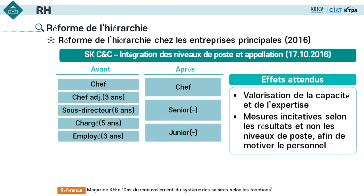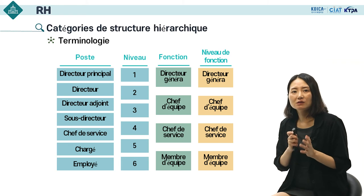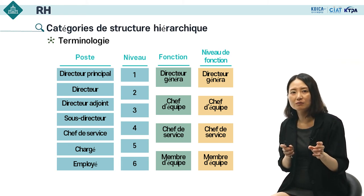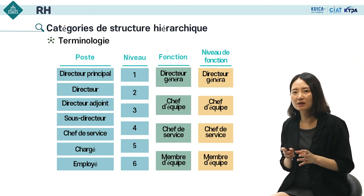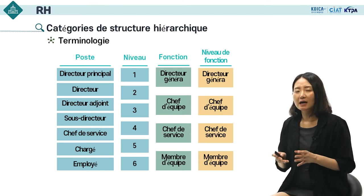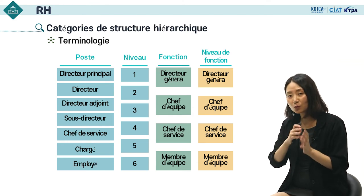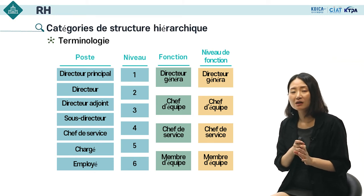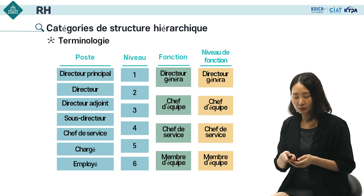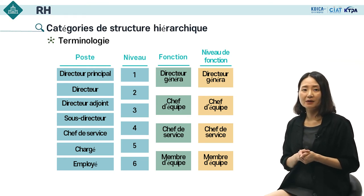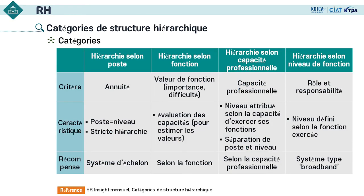Idem pour SK et NCNC. Voici la terminologie : de directeur principal à employé, de premier à sixième niveau et de directeur général à membre d'équipe. Je vous présente quatre catégories de la hiérarchie, mais il n'y a pas d'unique réponse — on ne peut pas déterminer quelle catégorie est la meilleure pour une organisation.